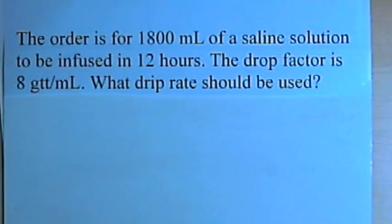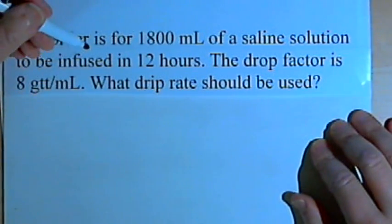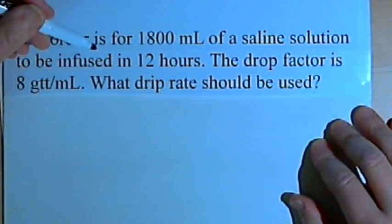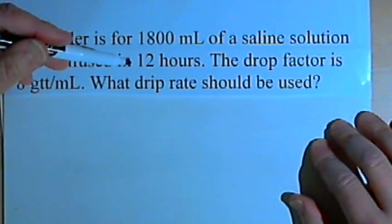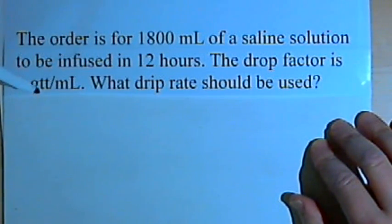The order is for 1800 milliliters of a saline solution to be infused in 12 hours. The drop factor is 8 gtt, or 8 drops per milliliter. What drip rate should be used?